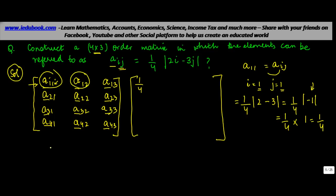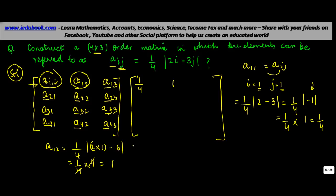For a₁₂: i = 1, j = 2. So (1/4)|2×1 - 3×2| = (1/4)|2 - 6| = (1/4)|−4|. Coming out of the modulus it becomes positive, giving (1/4)×4 = 1. So we write 1 at position a₁₂.